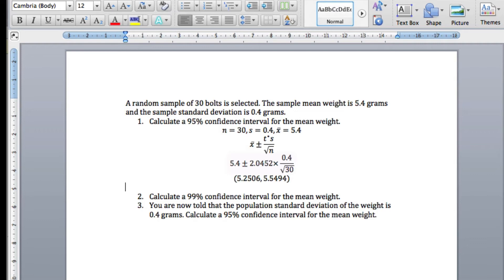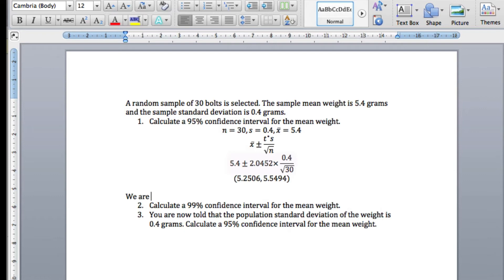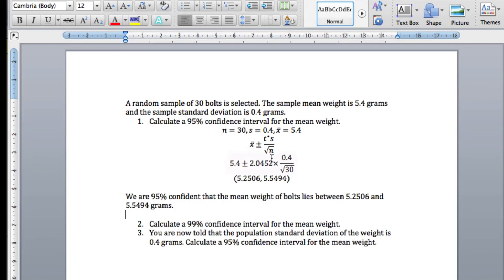And sometimes we're asked to interpret this, and the interpretation is like this. If we're asked to interpret this confidence interval, we do it this way. We start off with we are, and then whatever confidence interval you calculated, you put that down. In this case, we calculated 95%. So, we are 95% confident that the mean weight of bolts lies between, then I give the lower value, and the upper value, and then the units we measured in.